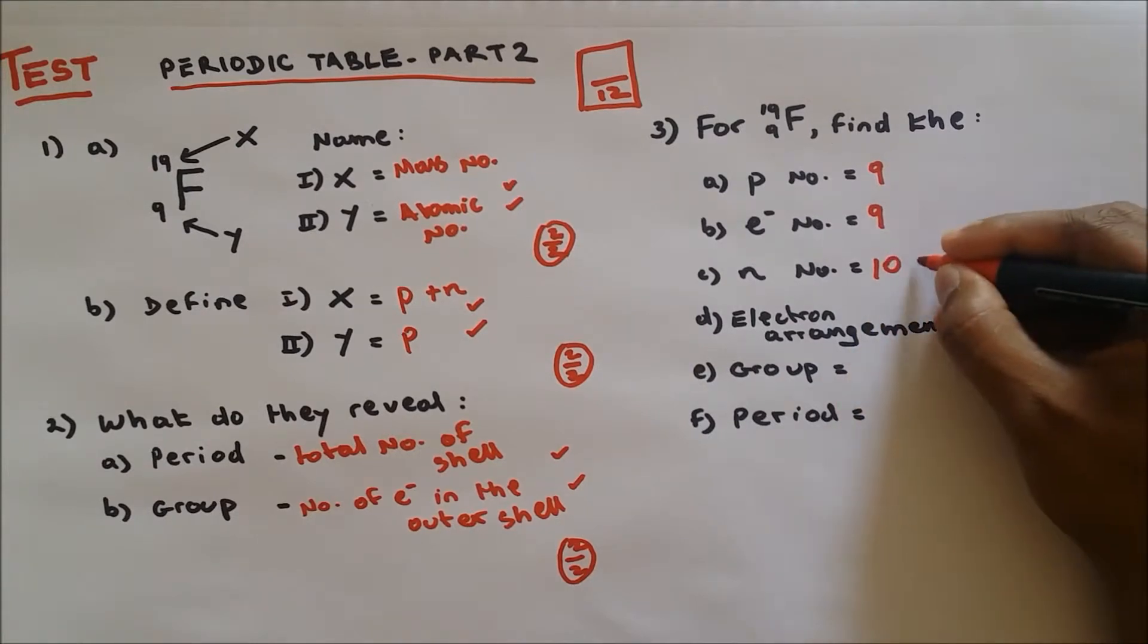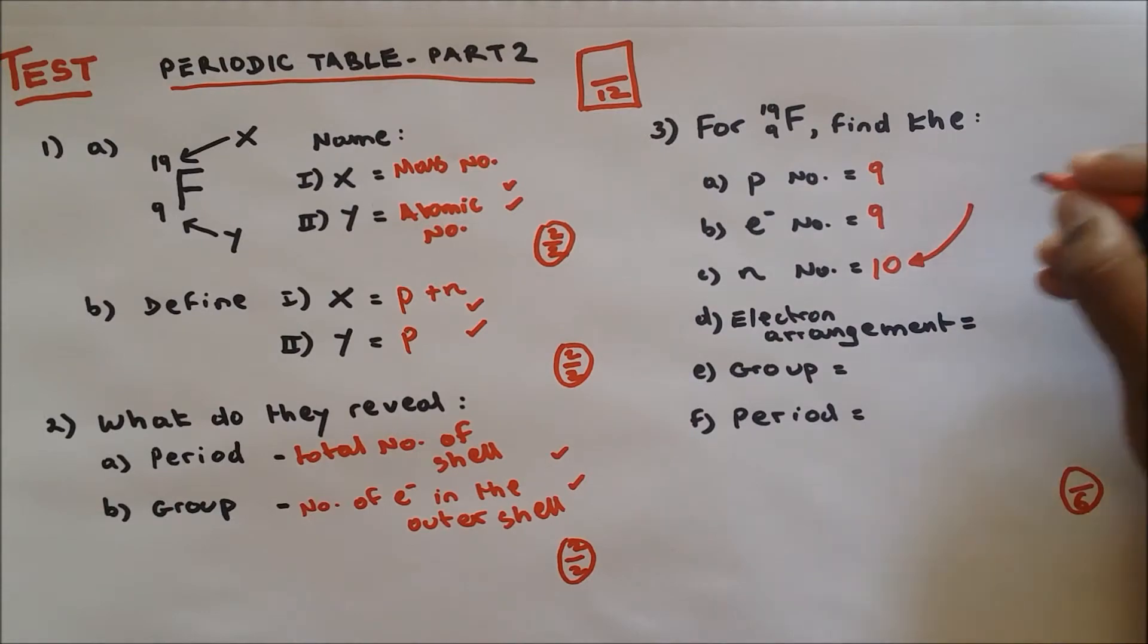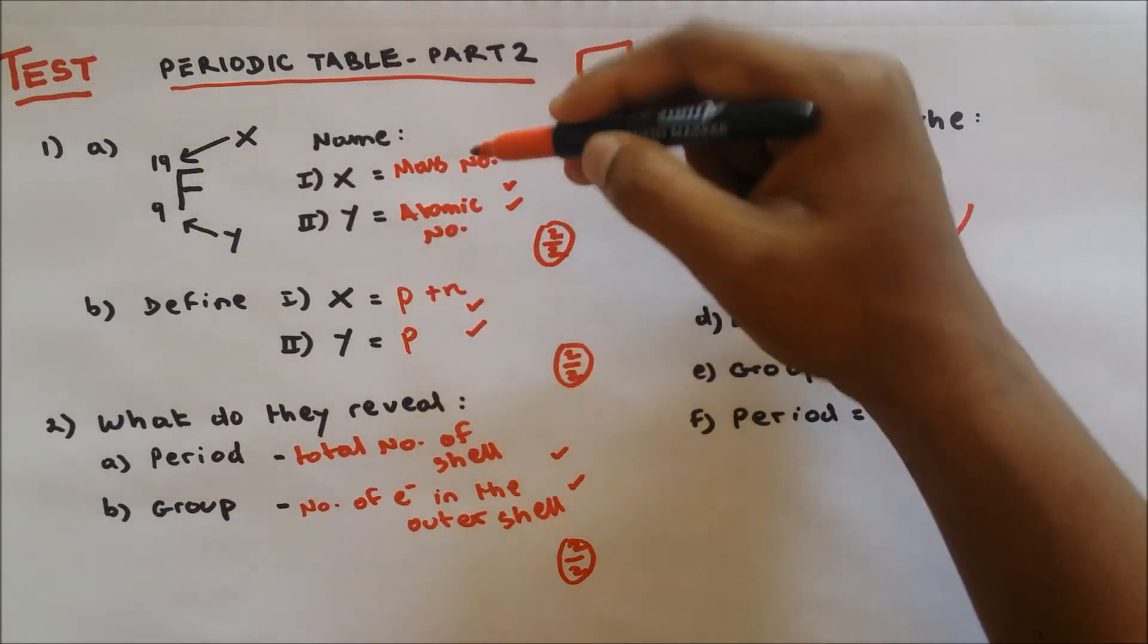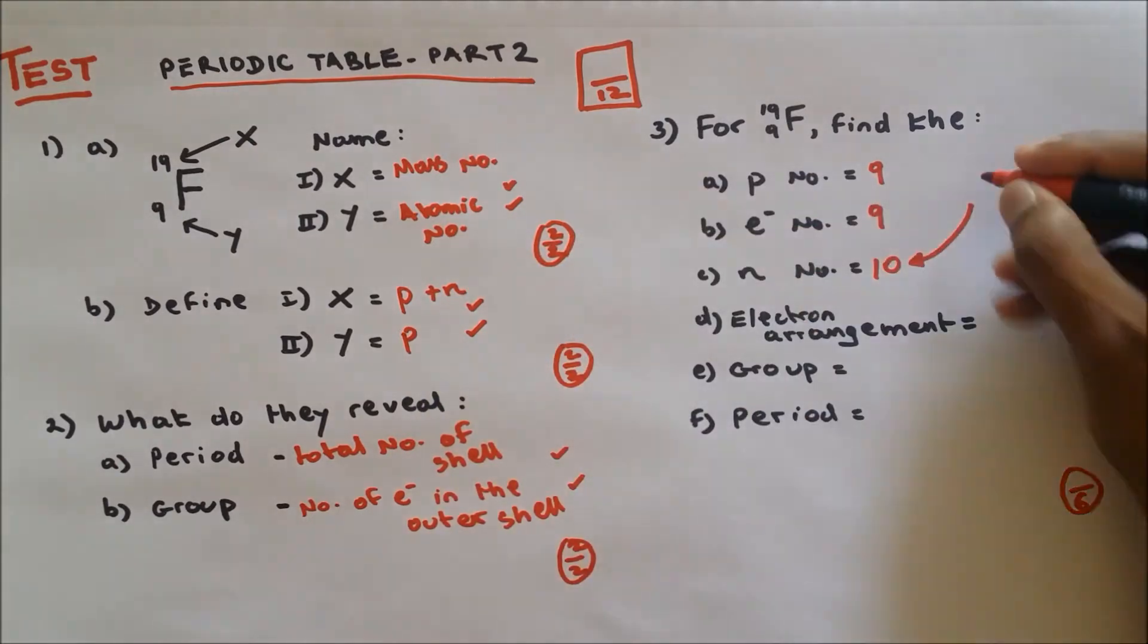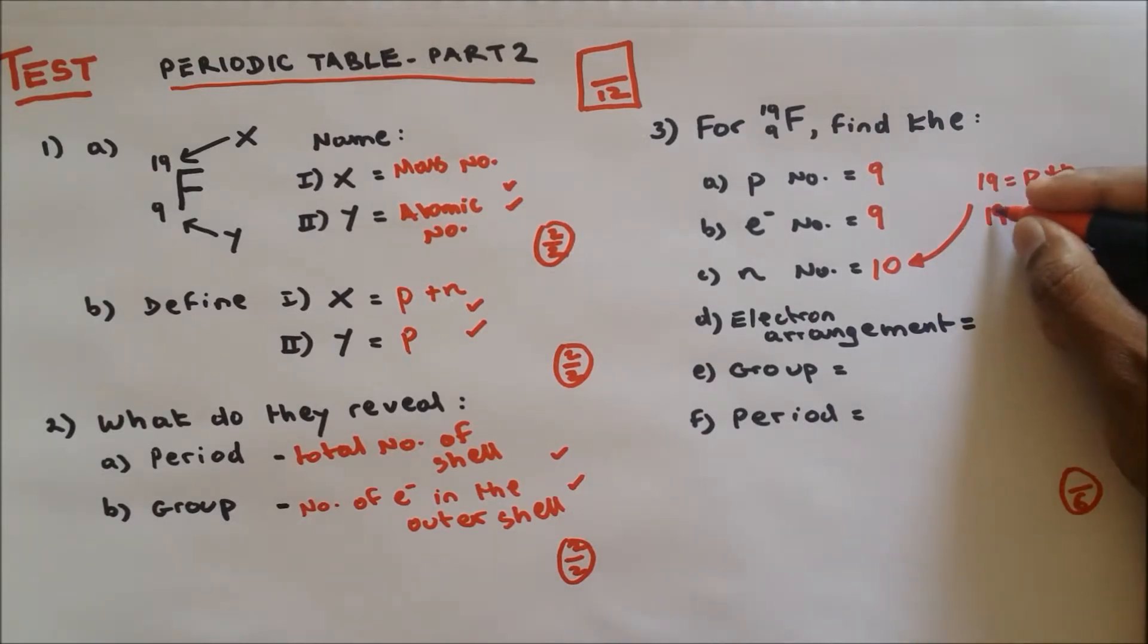Why? I've shown in my previous video how to find this out, but I'm going to tell you quickly now as well. The mass number is 19, which is the number of protons and neutrons. Proton number is 9, so bring the 9 to the other side. 19 minus 9 is 10, so neutron is 10.